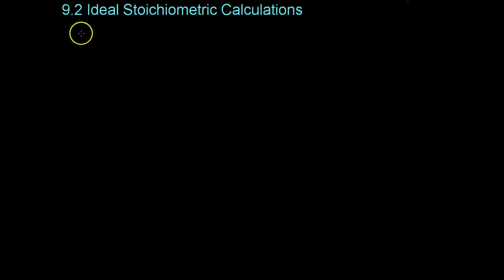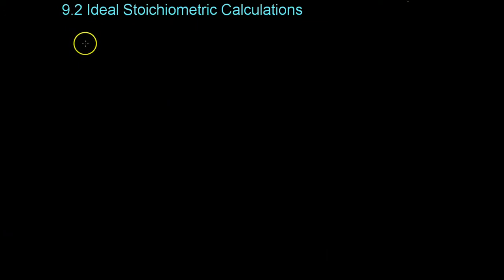This video covers Chapter 9, Section 2, which is Ideal Stoichiometric Calculations. This video is mostly going to be examples of various ideal stoichiometric calculations. If you understood completely what was going on at the end of the last video, you can probably skip over this one. However, I just want to clarify something.